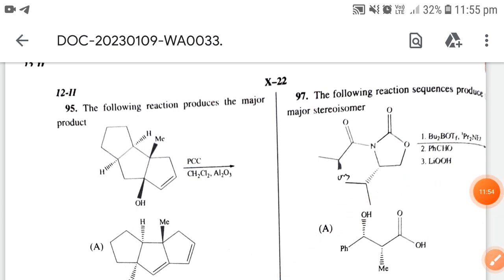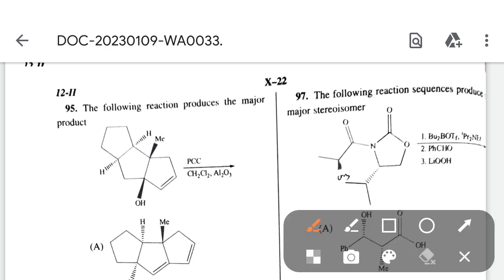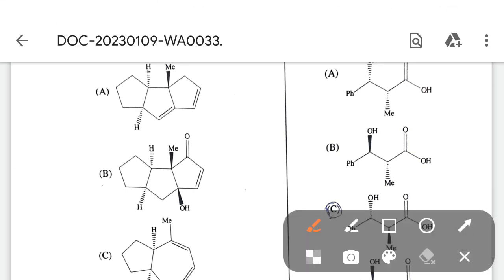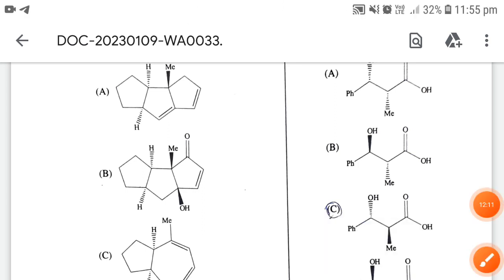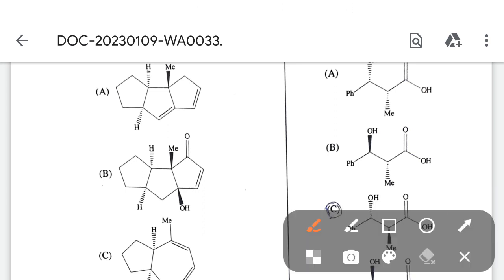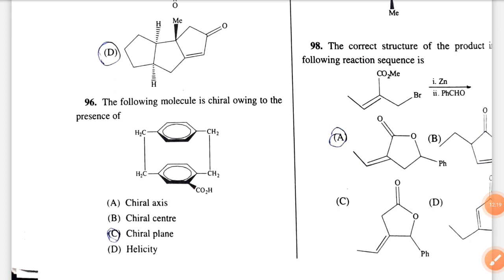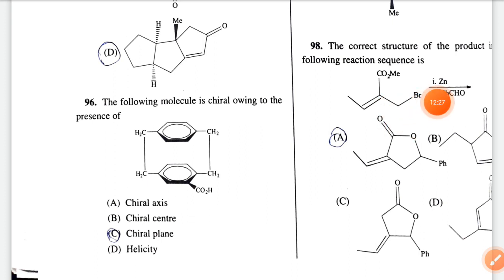Next question from Corey's work — the correct option is option C, though this is not a direct question; there is another type of reaction involved. Next: the correct structure of the product — at first ZnBr is formed, then it attacks PhCHO. The correct option is option A.